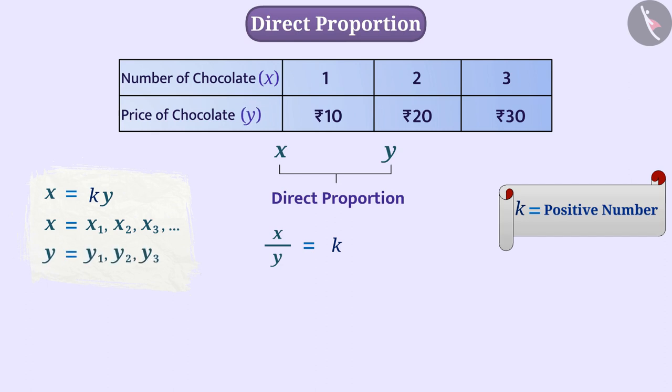then we can write x1 by y1 is equal to x2 by y2 is equal to x3 by y3 and so on is equal to k.